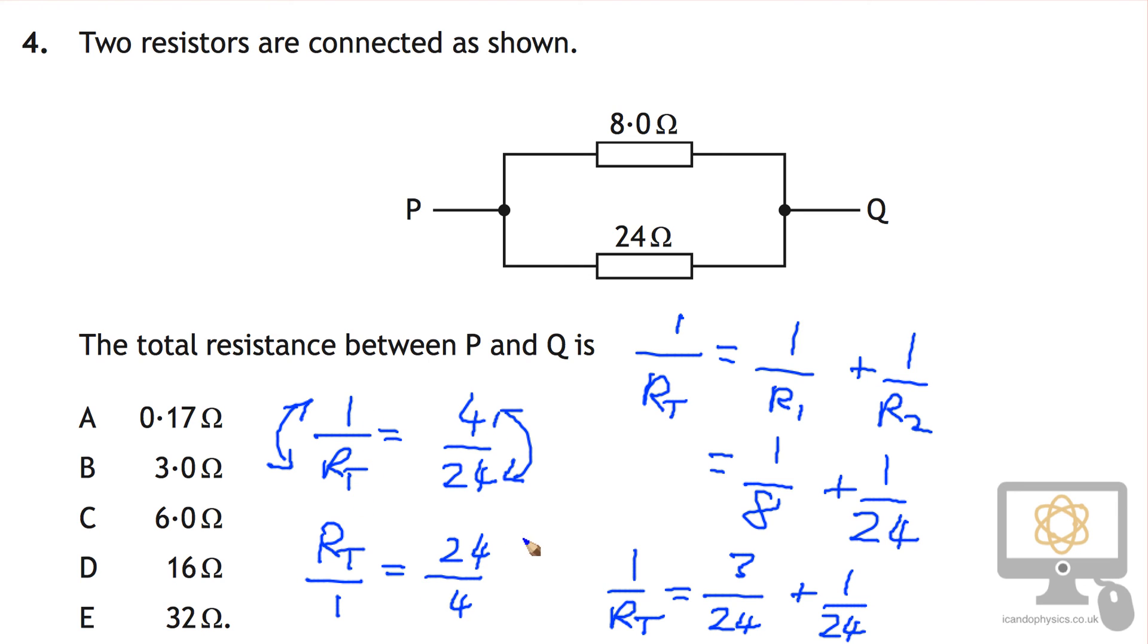So 1 over RT is equal to 4 over 24, but that's the same as RT divided by 1 is 24 divided by 4. And that's equal to, well 24 divided by 4 is 6. And so our answer has to be 6 ohms.